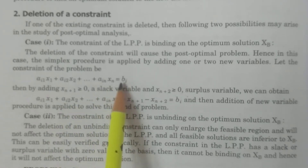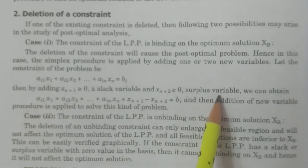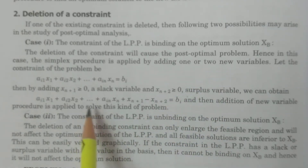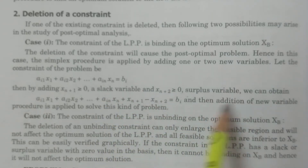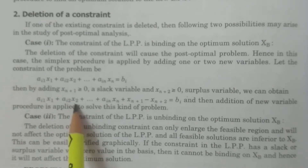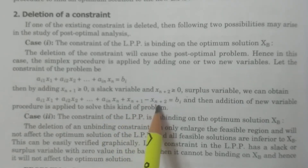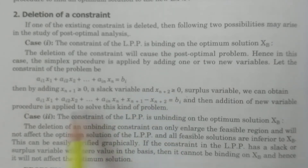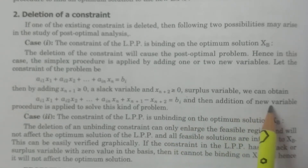We add two variables to the constraint before deleting it. The reformulated constraint becomes: ai1·x1 + ai2·x2 + ... + ain·xn + xn+1 − xn+2 equal to bi. Then the usual simplex procedure is applied for the addition of new variables to solve the problem.